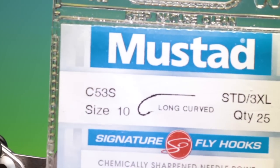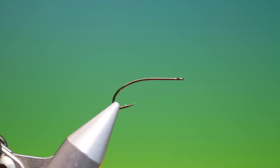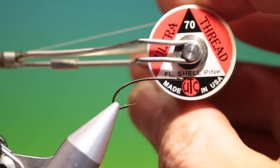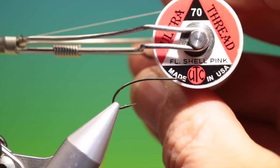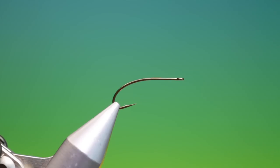We'll start with the Mustard C53S size 10 terrestrial hook. This is a Green Drake Emerger. We have some Shell Pink UTC Ultra Thread.